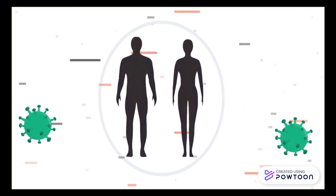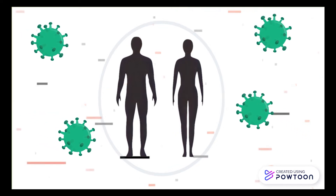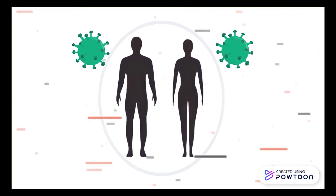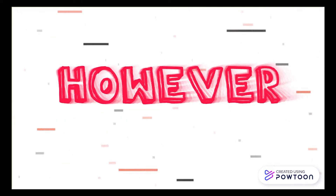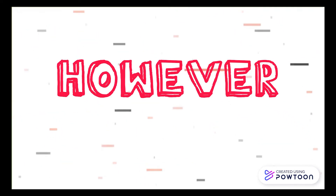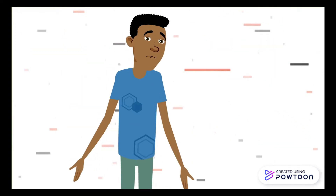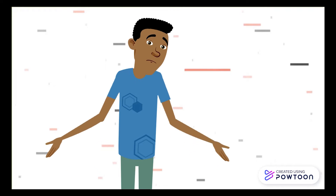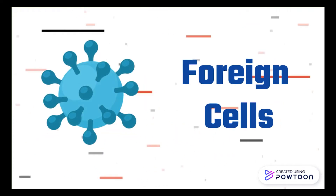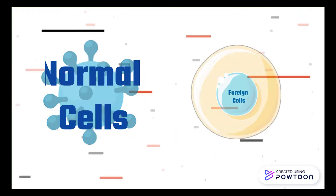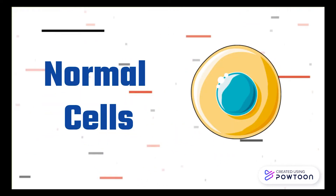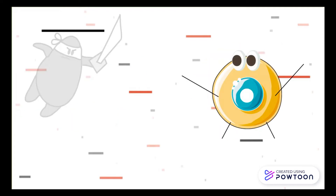Your immune system helps to protect you from invasive diseases. However, have you heard of a case in which the body's natural cells cannot tell the difference between the foreign cells and the normal ones, causing it to mistakenly strike the normal cells?